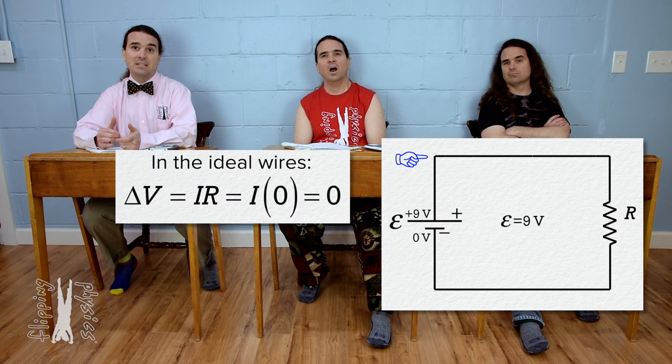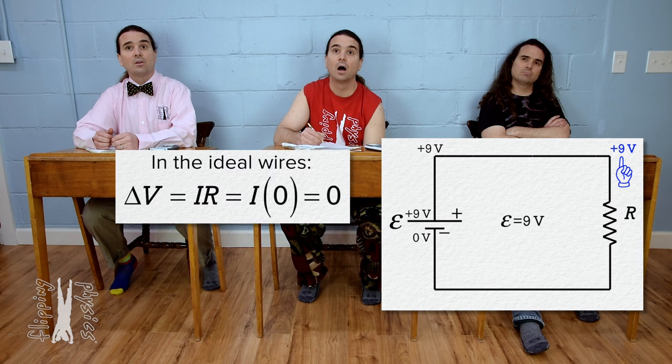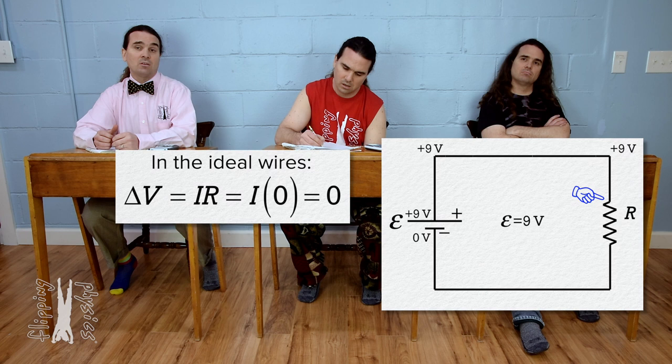And what about the upper right hand corner? Still zero resistance in the wire, so still 9 volts. Still correct. And what about the electric potential at the top of the resistor? Again, zero resistance in the wire, so 9 volts.